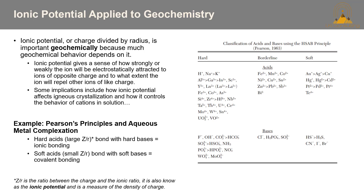Ionic potential — charge divided by radius — is important geochemically because much of the geochemical behavior depends on it. Ionic potential gives a sense of how strongly or weakly the ion will be electrostatically attracted to ions of opposite charge and to what extent the ion will repel other ions of like charge. Implications include how ionic potential affects igneous crystallization and controls the behavior of cations in solution. A great example is Pearson's principles for hard-soft acids and bases, which is applied to metal complexation.